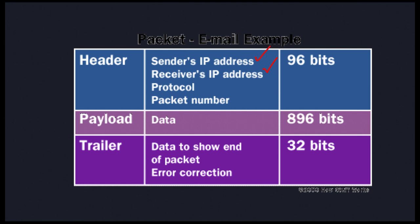In the case of email, it might be a specific protocol. In the case of the internet, it would be TCP/IP, or even HTTP. And then there's the packet number. When you send an email or photograph, it's broken up into a bunch of different packets depending on how big it is. Each packet has a number, which tells your friend's computer how to put all the packets back together to create a complete photograph or email.